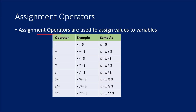Assignment operators are used to assign values to any variable. For example, if you pick this example, here this equals-to symbol is used to assign the value 5 into the x variable. So this operator helps to assign this value into the x variable.